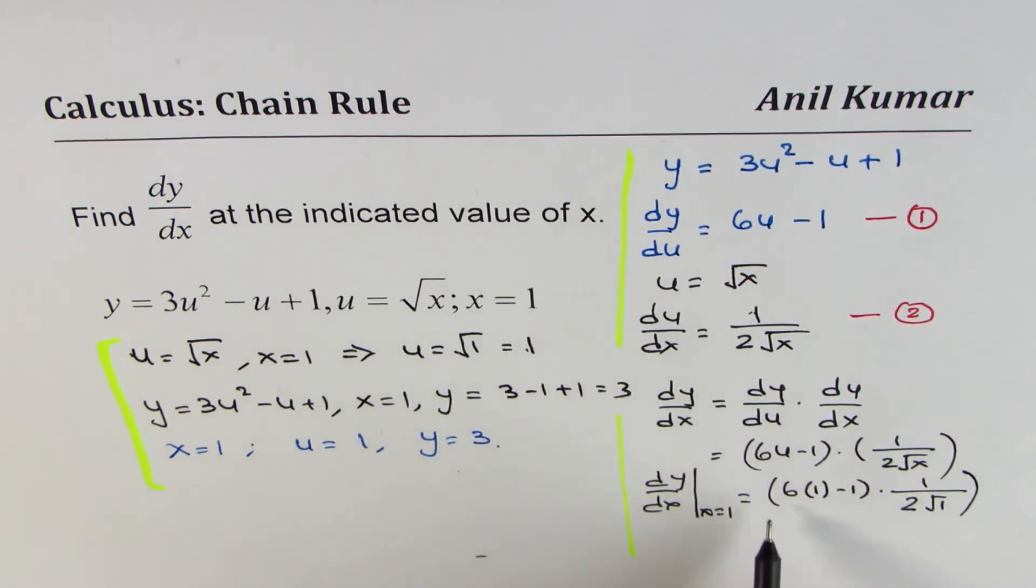So now we can evaluate this value by multiplying. 6 minus 1 is 5, so we get 5 over 2. 5 by 2. So the answer is 5 over 2.